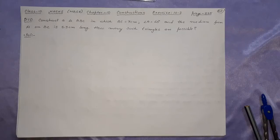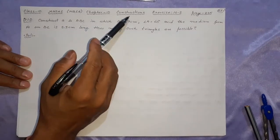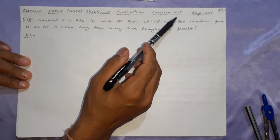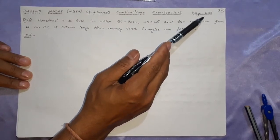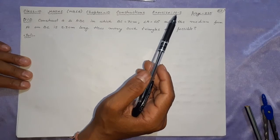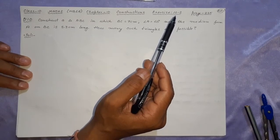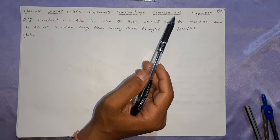Welcome viewers to ST Online Classes. Here I will do Class 10 Maths of MBSC, Chapter 10 Constructions, Exercise 10.2. The page number you will see in your textbook is 235. This is based on example number 4 that we have performed on the 31st of May.